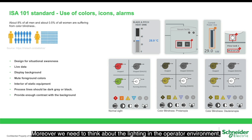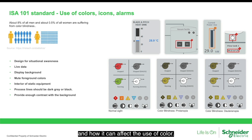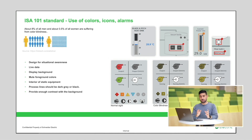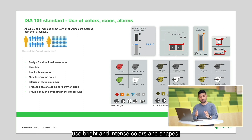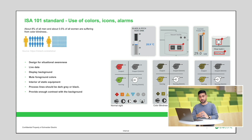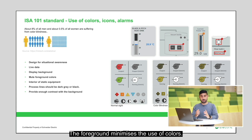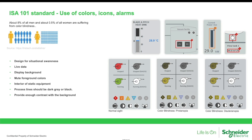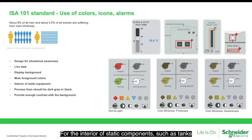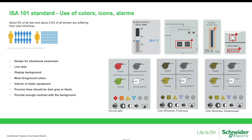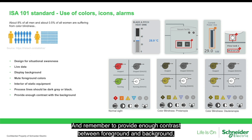Moreover, we need to think about the lighting in the operator environment and how it can affect the use of color. So when we use color, we need to design for situational awareness, especially in alarm situations. Use bright, intense colors and shapes to direct operator awareness. Use cool colors for live data. The display background should be a non-alarm, unsaturated gray color. For the foreground, minimize the use of colors for interior static components such as tanks — use the same background color as the display. The process line should be gray, dark gray, or black.